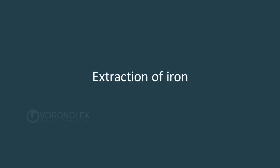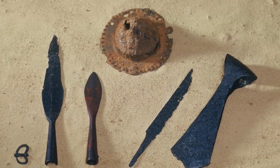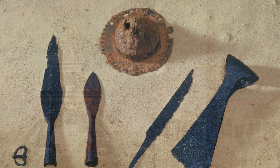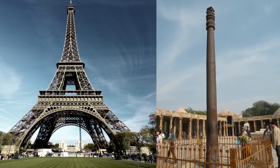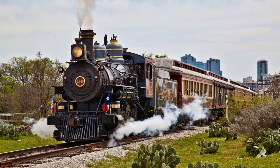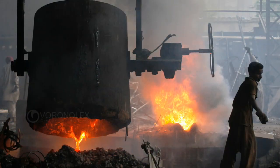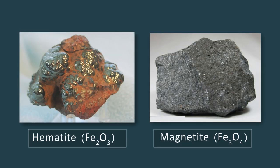Extraction of Iron. It has been since 5000 years that man is using iron. Iron is the second most abundant metal in the earth. The most important ores of iron are hematite and magnetite.